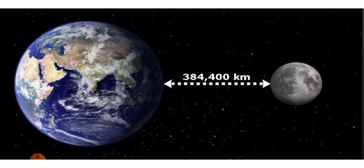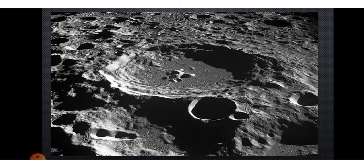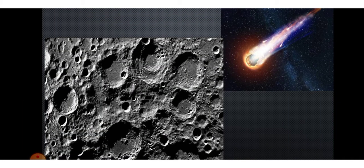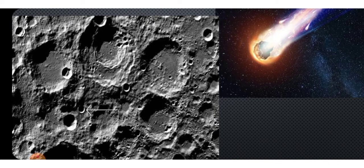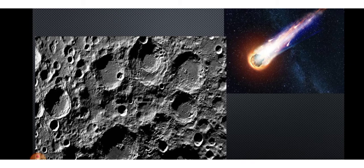The moon is 384,400 km away from the earth. The surface of the moon looks gray — it has mountains and plains covered with rock dust. There are many big ball-shaped holes called craters of the moon. The craters are formed by chunks of rocks called meteoroids that strike the moon, creating these bowl-shaped holes.